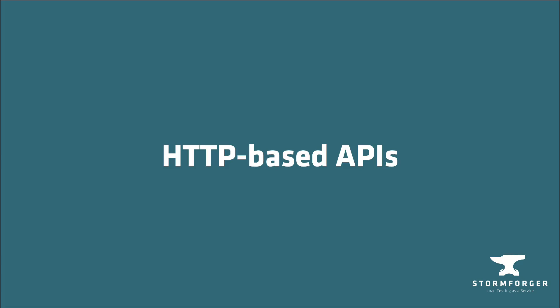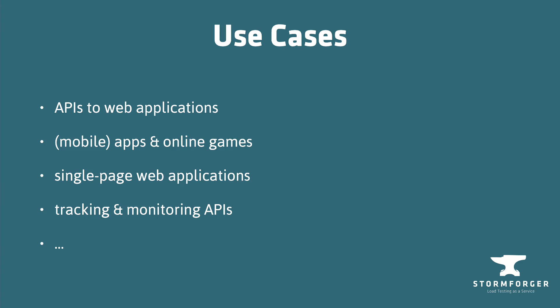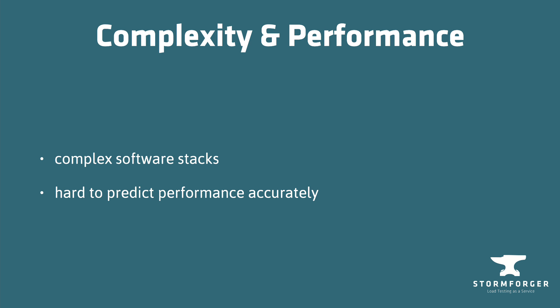HTTP-based APIs can be found everywhere. Examples for APIs are APIs to web applications, backends for mobile applications and online games, single-page web applications, tracking and monitoring systems and so on. Applications that offer such APIs can be complex systems with extensive software stacks and their performance can be hard to predict.